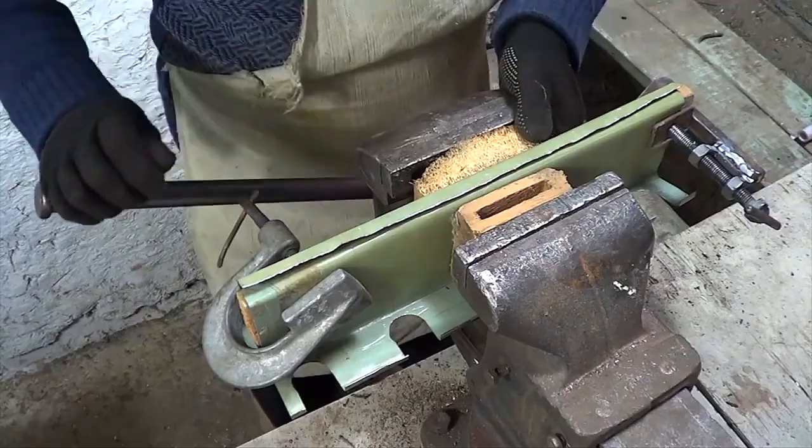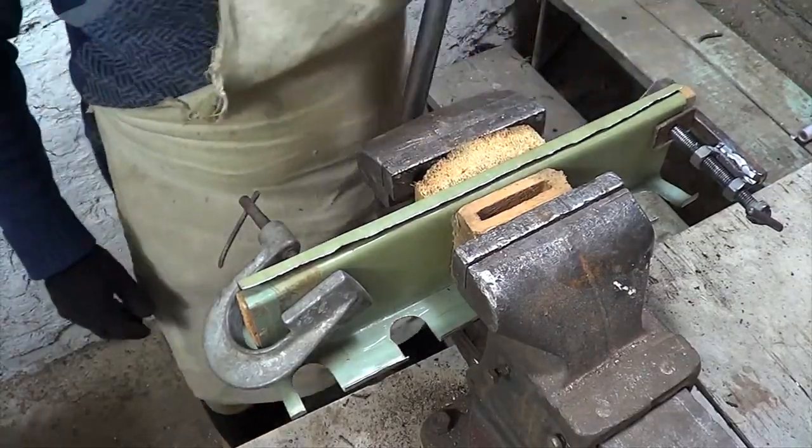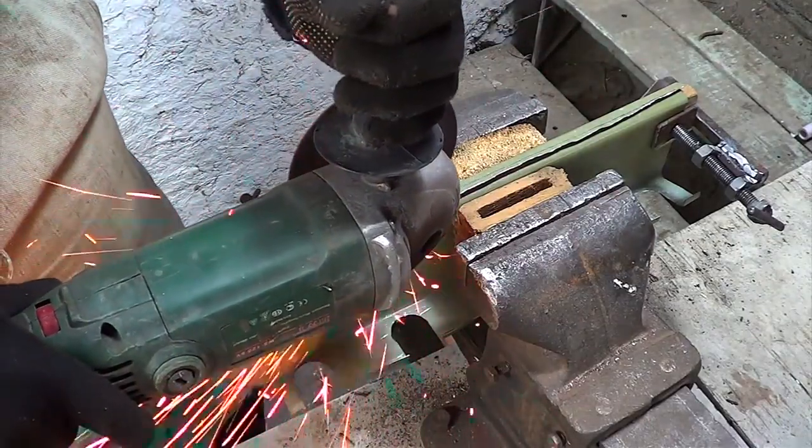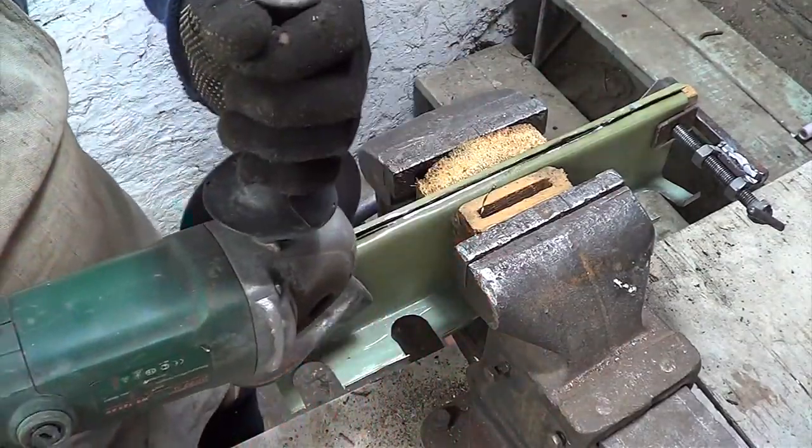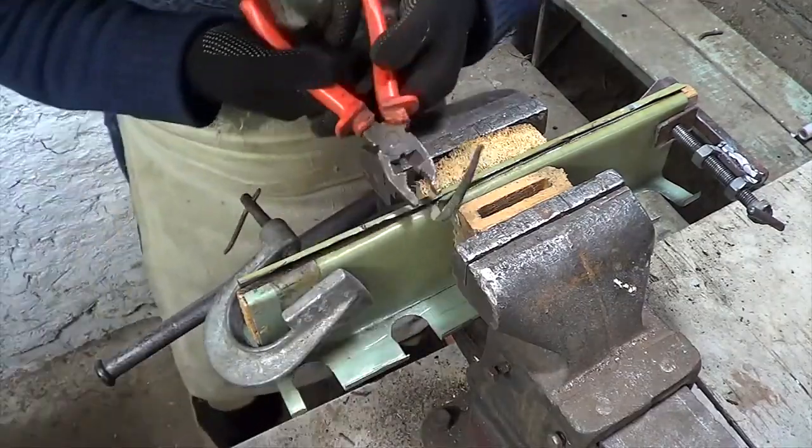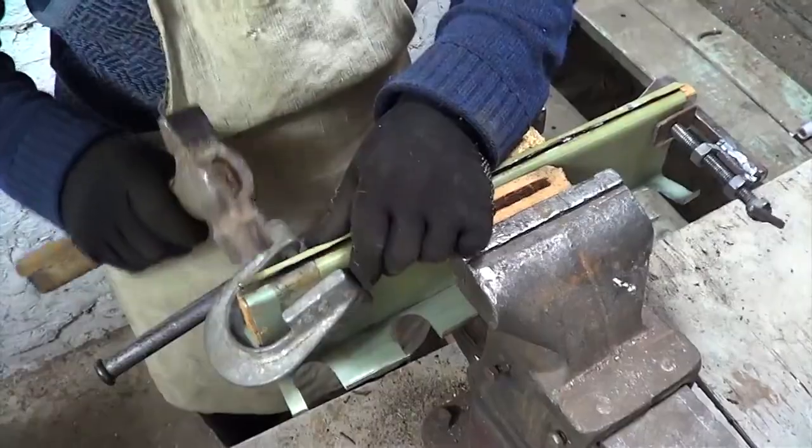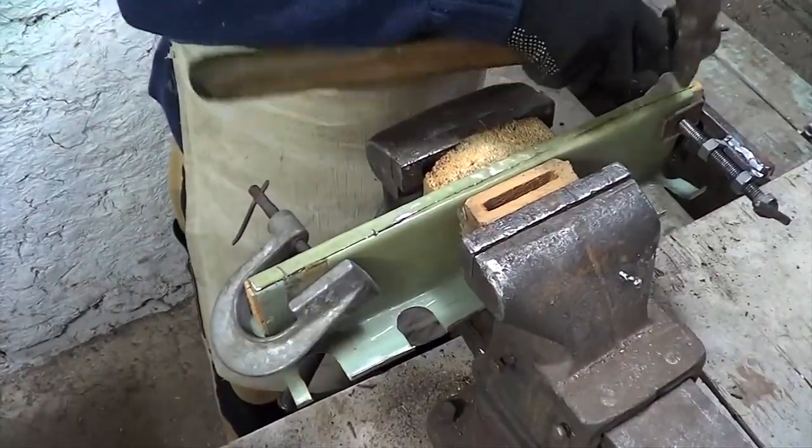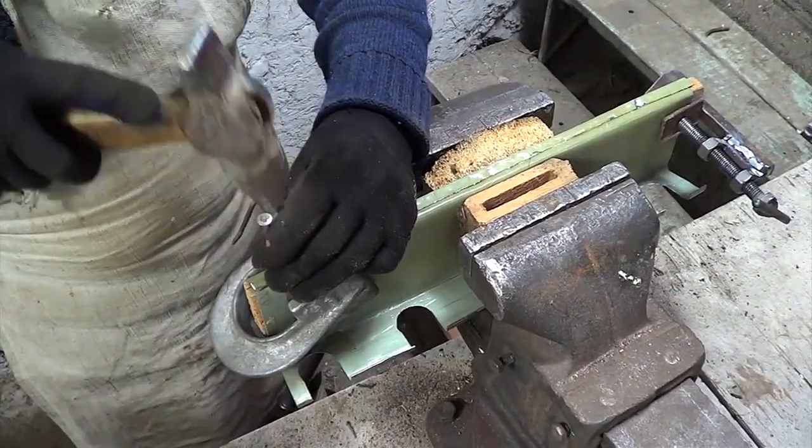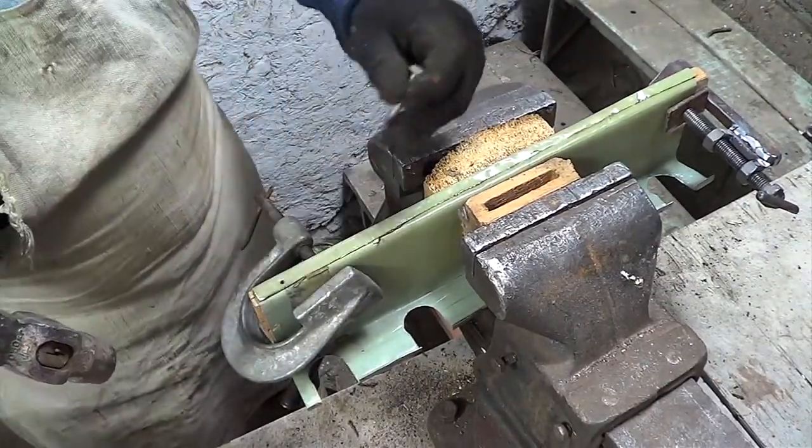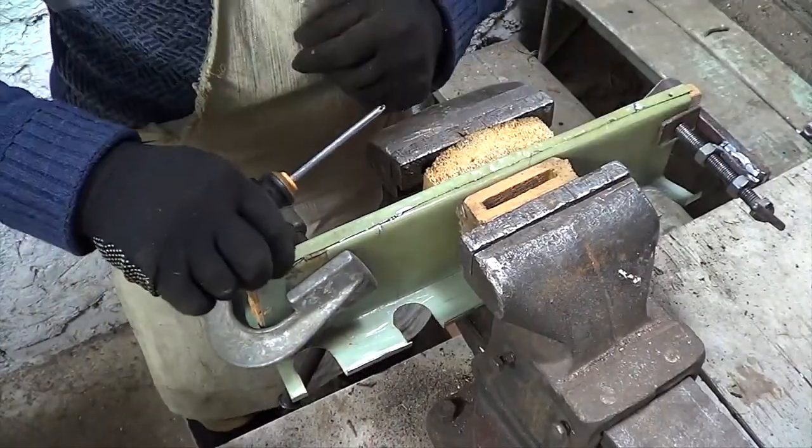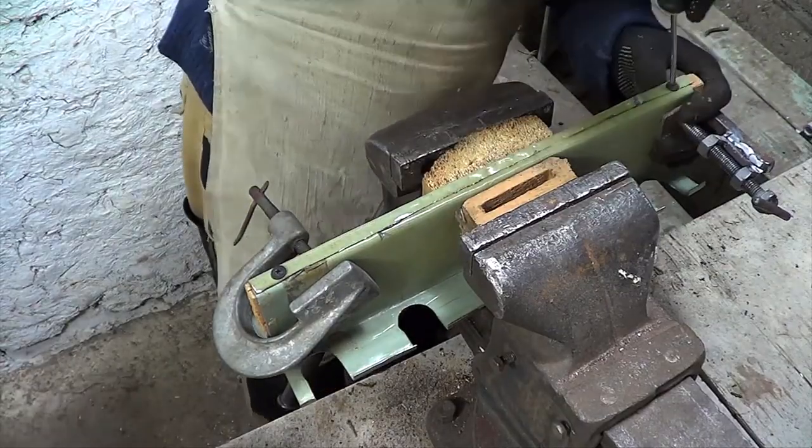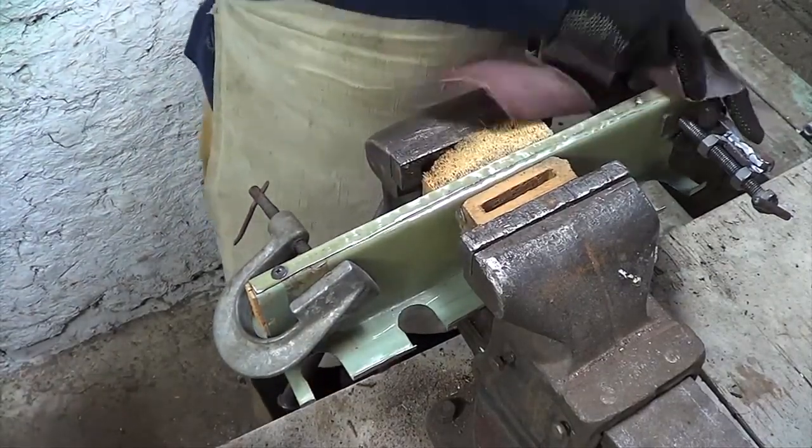We fix the blanks with a bar in a vise and cut off the excess metal. Make holes in the metal at the edges of the workpieces and screw the screw into the bar. Polish this edge to get rid of the burrs in the metal.